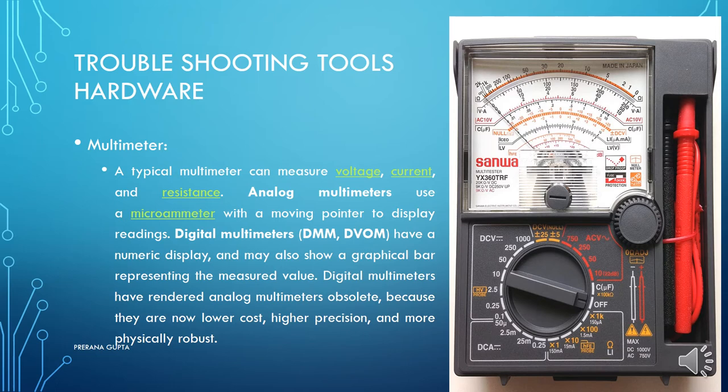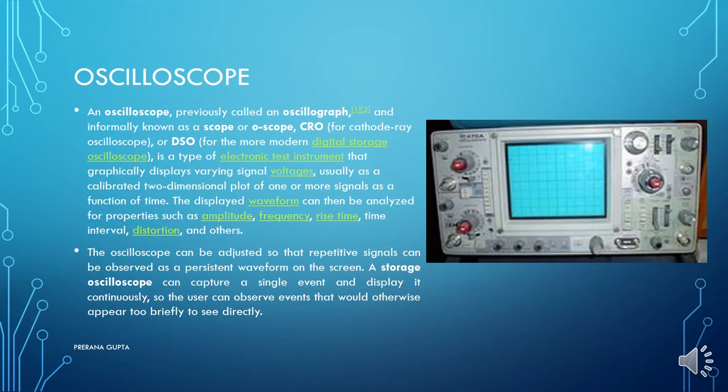Digital multimeters are better compared to analog and have replaced them because of lower cost, high precision — meaning correct values — and being more physically robust. Next is the oscilloscope.